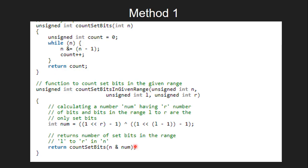Let's see the code for the same. Here, first we call the function count_set_bits_in_given_range and we pass the parameters: the number n and the range l and r. As discussed earlier, we first find a number num which has r number of bits, where bits from the range l to r are set bits and the rest are 0. Then we find the bitwise AND of that number, get a new number, and pass the new number to the count_set_bits function.